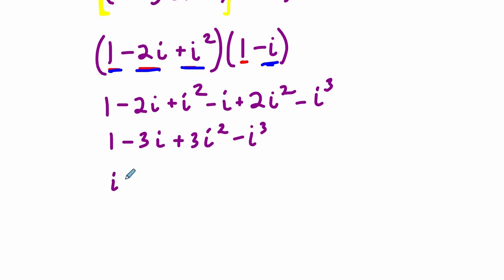If you remember, i equals the square root of negative 1. This means that if you square both sides, i squared is negative 1. So here we have 1 minus 3i minus 3, because we have 3 times negative 1 is negative 3, minus i cubed.